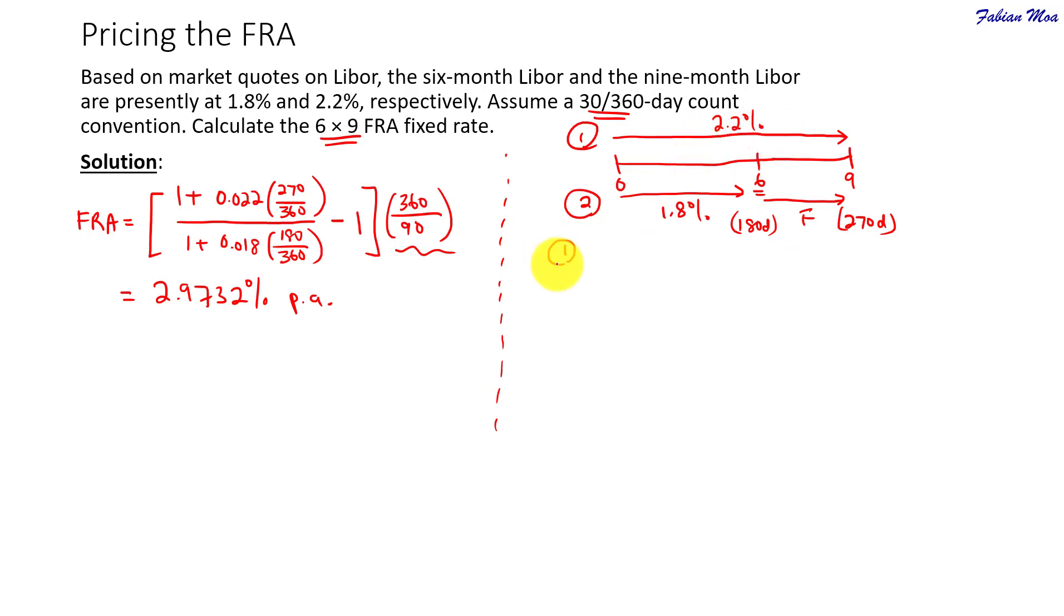The cost here would be 1 plus 2.2%. Then you multiply by the number of days, which is 270 over 360. And then we set it equals to the part 2.